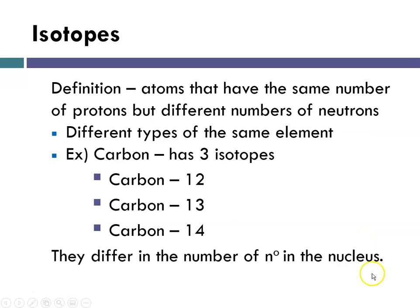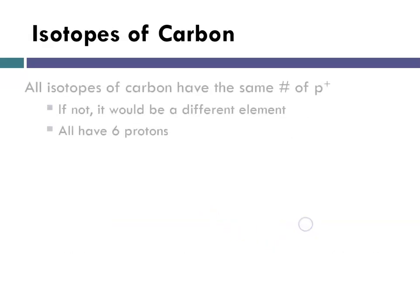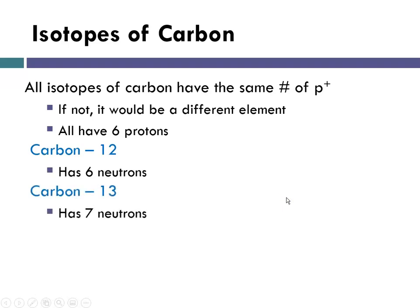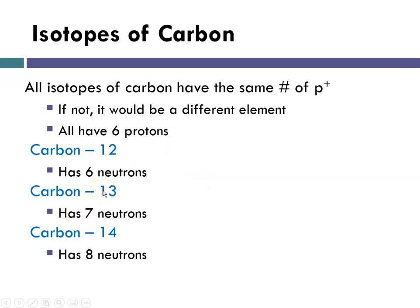The carbon isotopes differ in the number of neutrons in the nucleus. Carbon-12 has 6 neutrons, carbon-13 has 7, and carbon-14 has 8. All isotopes of carbon have the same number of protons — if not, they would be a different element — so they all have 6 protons. 6 plus 6 is 12, giving us carbon-12; 6 plus 7 is 13, giving us mass number 13; and 6 plus 8 is 14, giving us carbon with mass number 14.